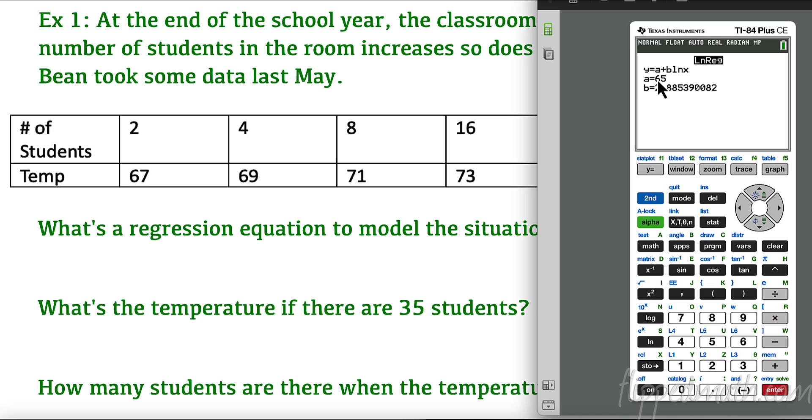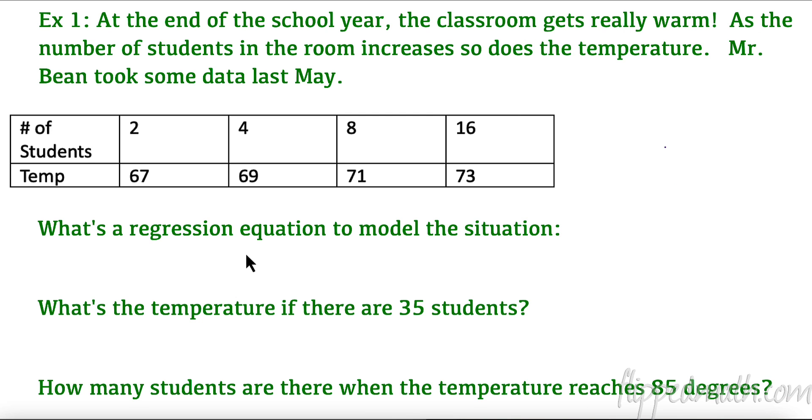Our equation is going to be a which is 65 plus 2.8, I'm going to round that to 2.89 natural log of x. So here we go, let's write that down. f(x) equals 65 plus 2.89 natural log of x. Then it says, what's the temperature if there are 35 students? That is an x value. Here's a great thing, I stored this one. I know I'm going to put 35 right in here. I know that my equation is going to be f(35) equals 65 plus 2.89 times the natural log of 35.